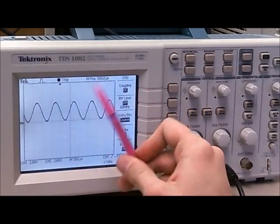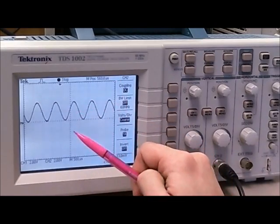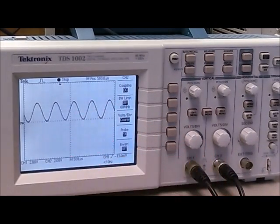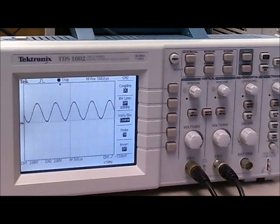That pretty much summarizes how to get the expected results on the oscilloscope from the digital multimeter.